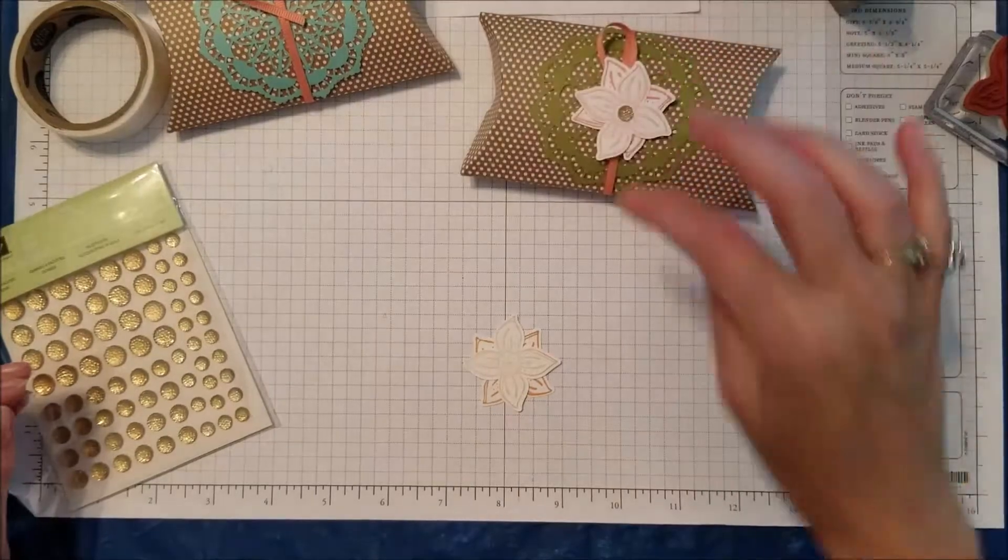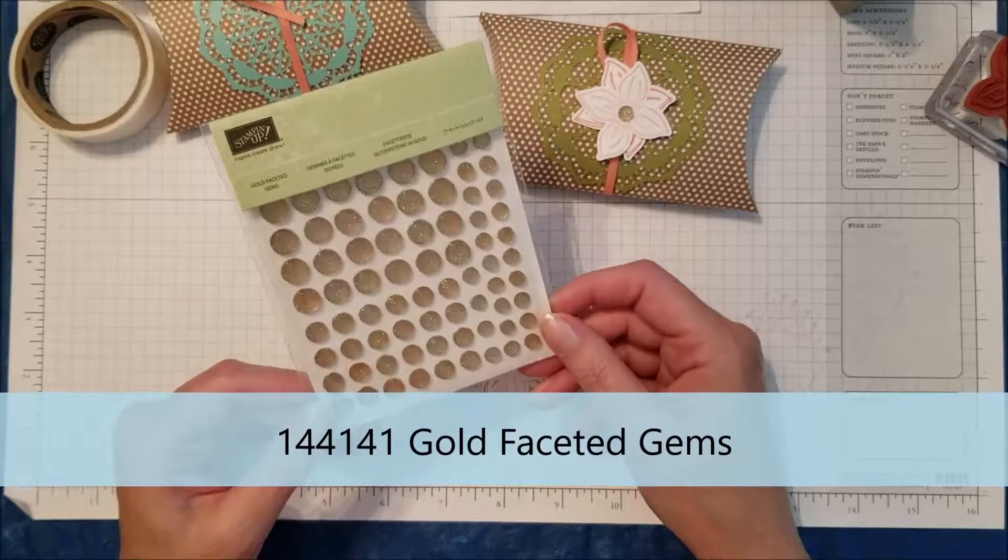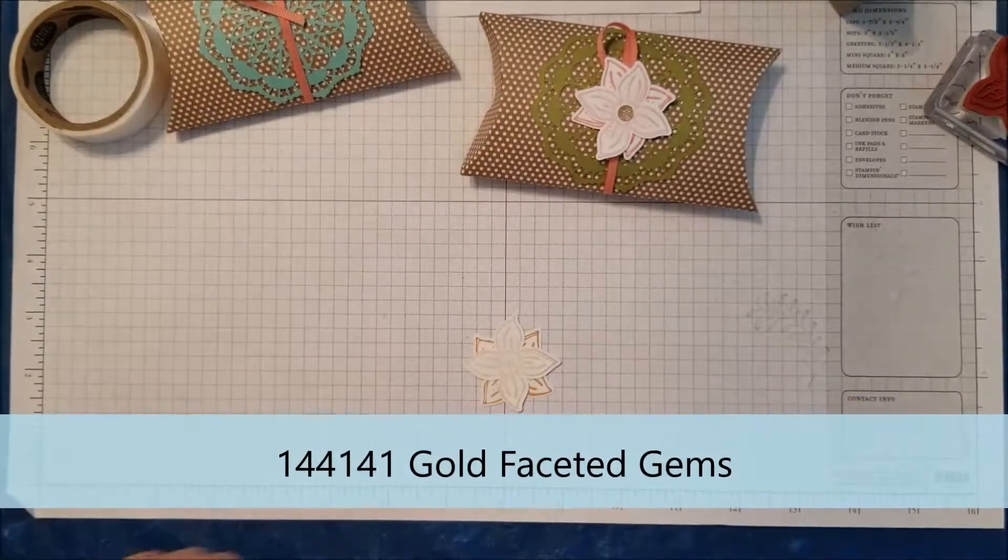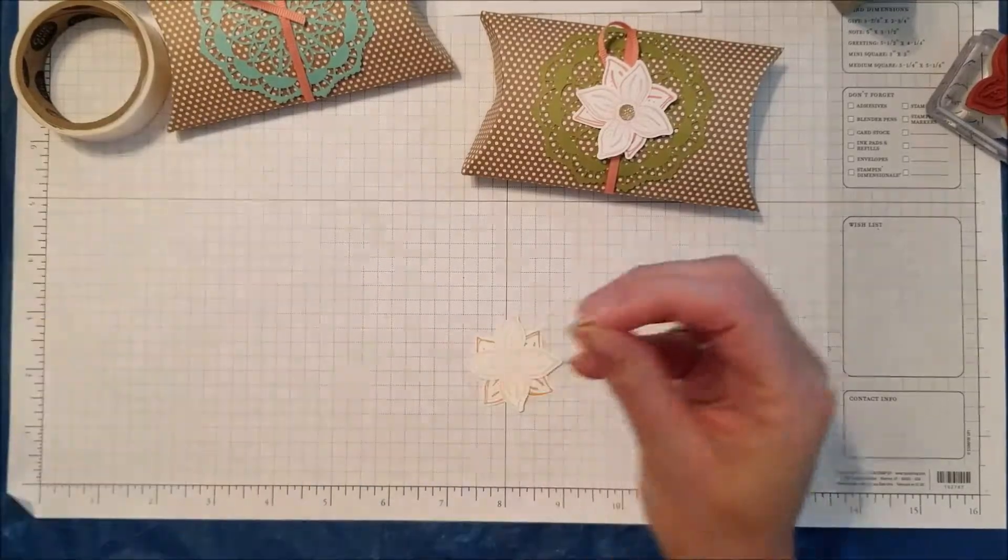Now I thought the middle needed a little something to pop it up a little bit, so I decided to use some of our gold faceted gems from the catalog. I really like these, they're great for daisy centers but I am going to use one of these right in the middle of my flower.